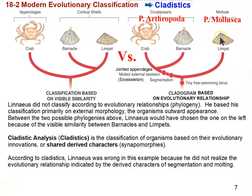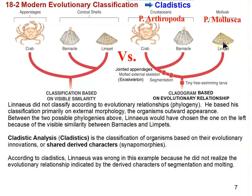Limpets you can think of as basically a snail with a different shaped shell. Snails usually have that spiral shell, but limpets have a conical shell. If you were to turn a limpet over and look at the underside, you would see something that looks like a snail living under that shell.